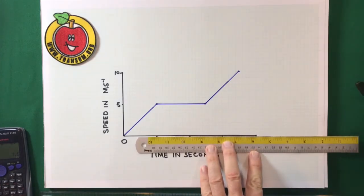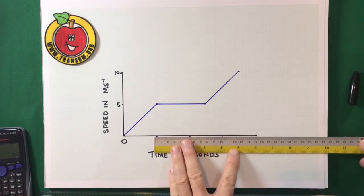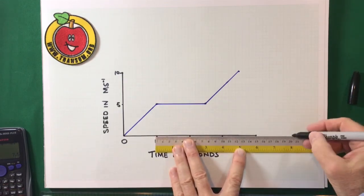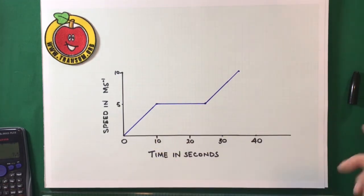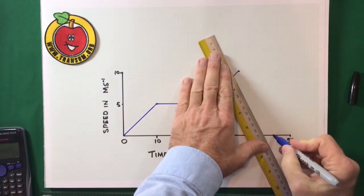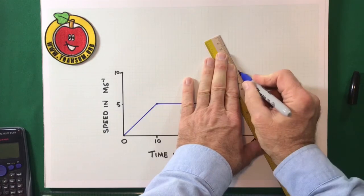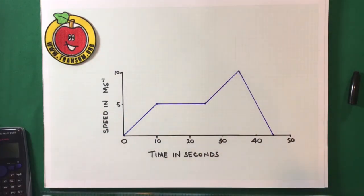Oh, I've just realized I haven't made my horizontal axis quite long enough. I need to add another 10 seconds on to the end. So, here we go. She then decelerates down in 10 seconds to zero speed. So, that is what the velocity time or the speed time graph looks like.